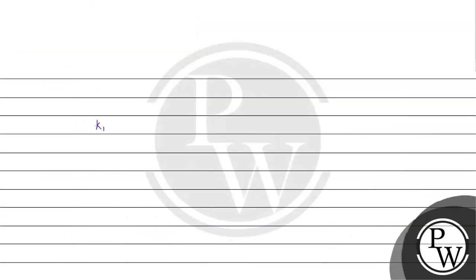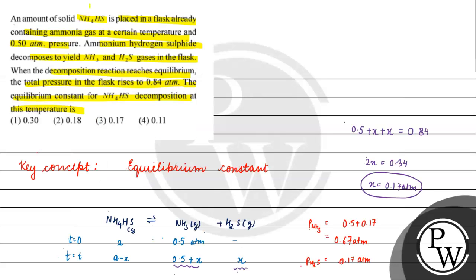Now Kp will be equal to partial pressure of ammonia multiplied by partial pressure of H2S. That's 0.67 into 0.17, which equals 0.1139.